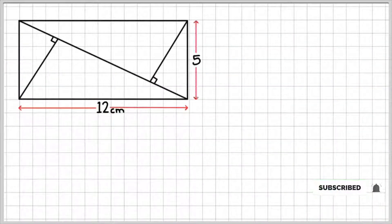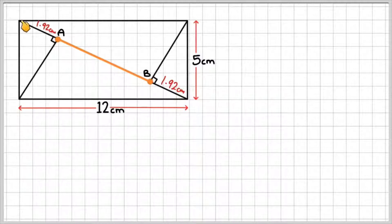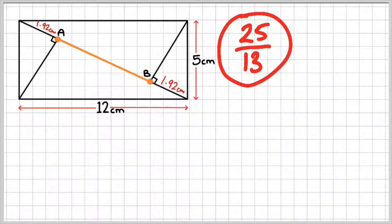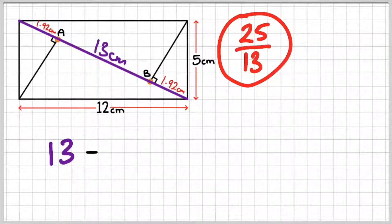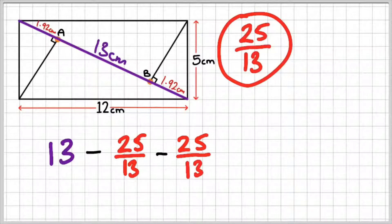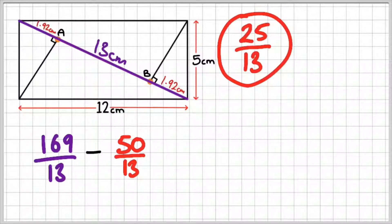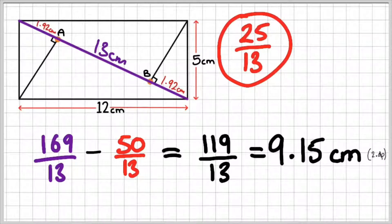Finally, we've got all the information we need, including the shorter lengths from B to the vertex and from A to the vertex, both 1.92 centimeters. We're going to use the exact value of 25 over 13 to avoid rounding. In step one we worked out the diagonal as 13 centimeters. Now: 13 minus 25 over 13 minus 25 over 13 gives 169 over 13 minus 50 over 13, which equals 119 over 13, approximately 9.15 centimeters to two decimal places. Of course, there are other ways of solving this, including trigonometric ratios.